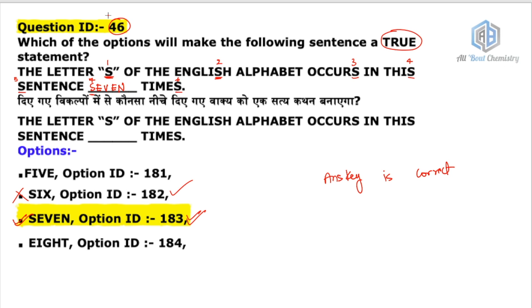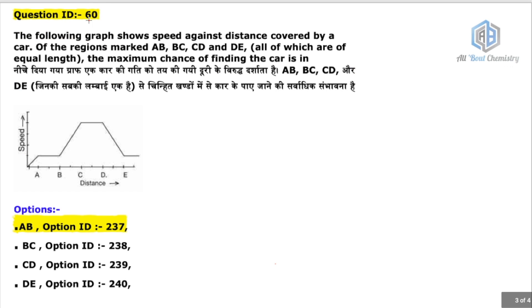Now let's take the next question, Question ID 60, which many of you also requested. There's a lot of confusion here. The question says: 'The following graph shows speed against distance covered by a car. One of the regions marked AB, BC, CD, DE — all of which are of equivalent length — find the maximum chance of finding the car.' The answer according to the answer key is option 237. Let's see whether it is correct.